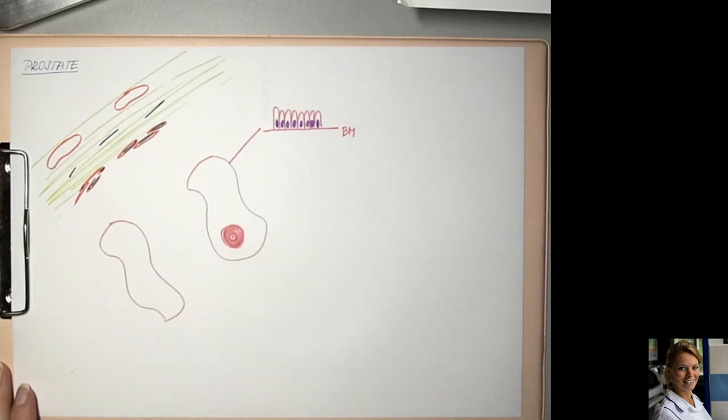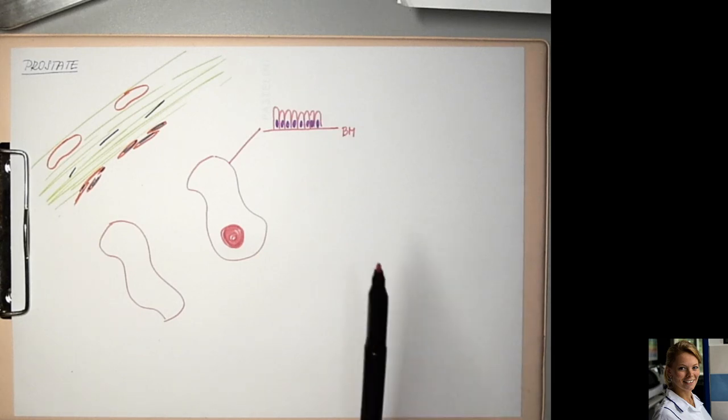These structures are concentric acellular deposits of glycoproteins and glycosaminoglycans and partially epithelial cells. They are apparent in men older than 20 years and their number increases with age. And they may undergo calcification.